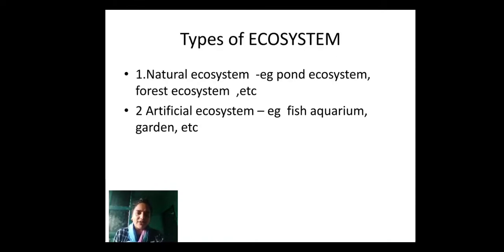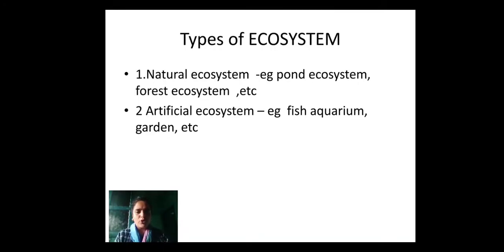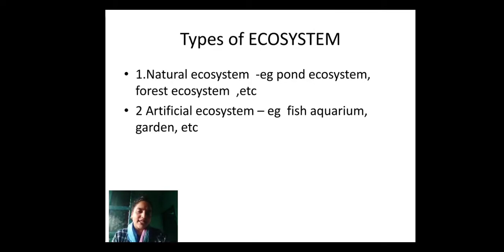Next, we have artificial ecosystem. The word artificial itself says it is made by man. For example, a fish aquarium is an ecosystem which has both biological surroundings as well as physical surroundings. Since it is made by man, it comes under artificial ecosystem. In the same way, a garden is also an example of artificial ecosystem.